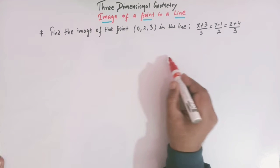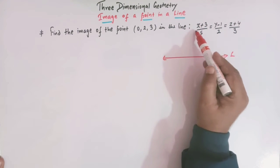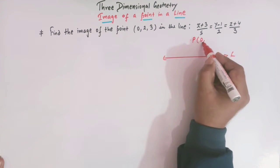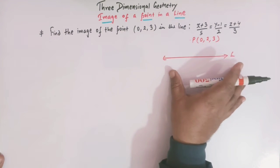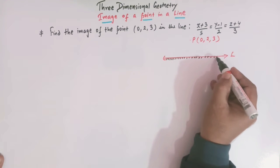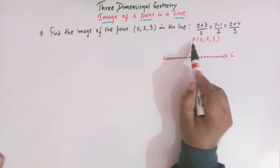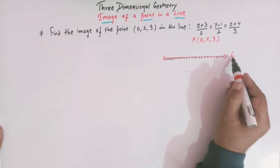We are given the Cartesian equation of a line. Let us call this line L, whose equation is given. We have a point P whose coordinates are (0, 2, 3). This line L will act as a mirror for point P, so we assume line L as a mirror and we have to find the coordinates of the image of point P in this line. Let us take the image of point P with respect to line L as Q.